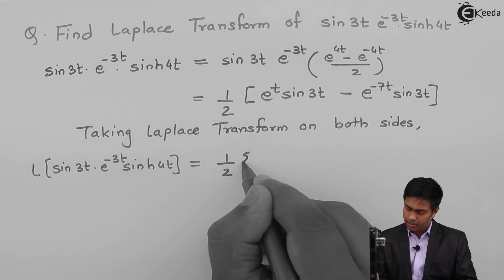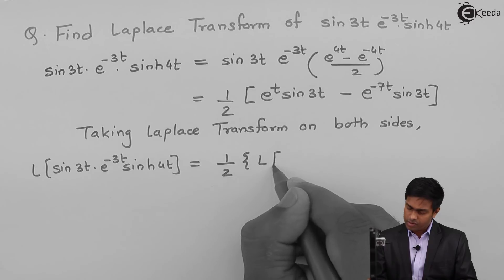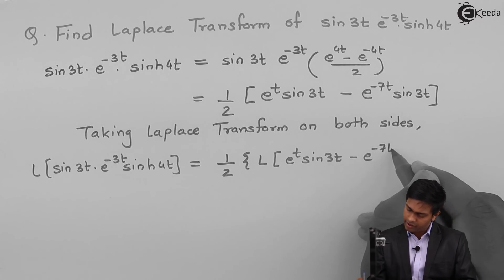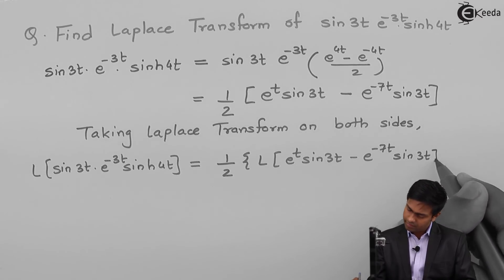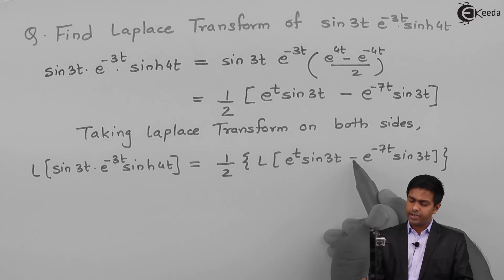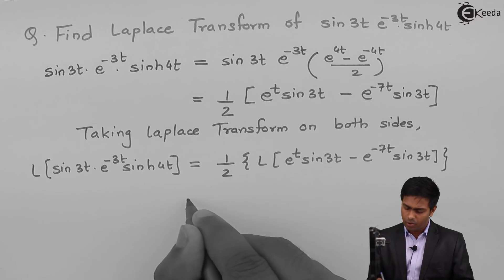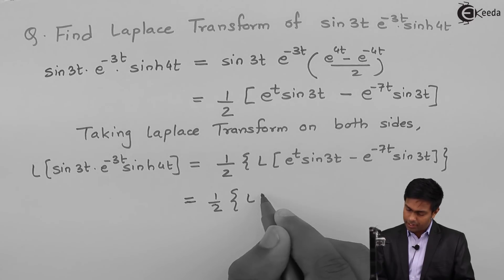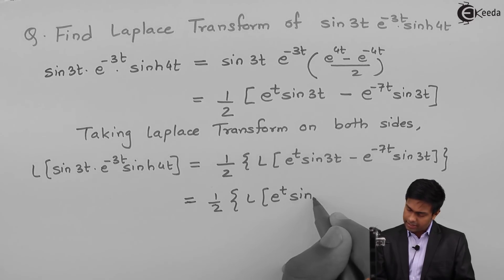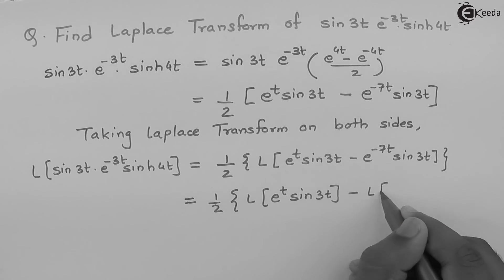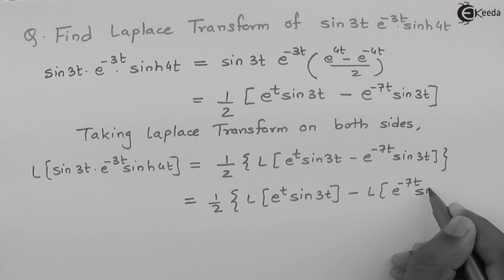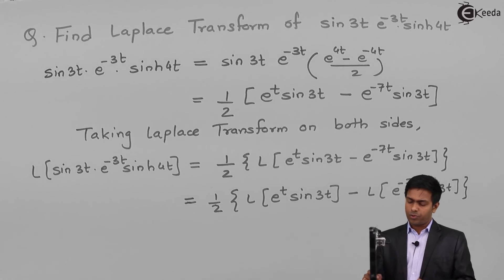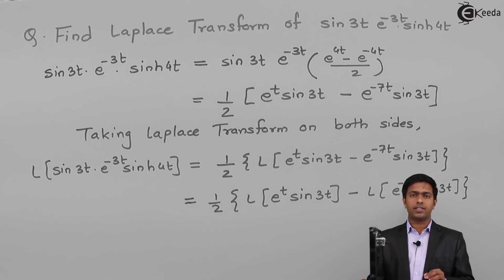Since 1/2 is a constant we take it outside, giving us (1/2) · [L{e^t · sin(3t)} - L{e^(-7t) · sin(3t)}]. Since there is a negative sign between two functions we can separate and apply the Laplace transform to each term individually.